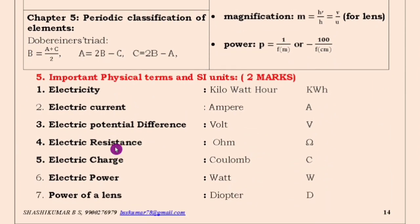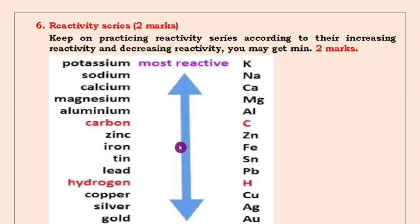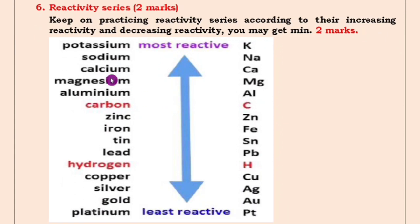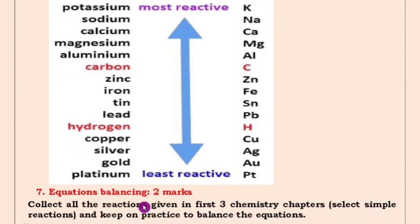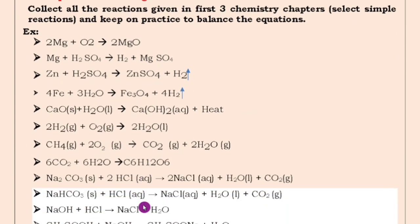The next one is importance of physical terms and SI units — all the physical terms and SI units are given here, so practice. Next is the reactivity series, which is very important. Potassium is very reactive and platinum is least reactive — practice it. The last one is balancing equations, which is also very important because from the chemical equations chapter they are going to ask 2 to 3 marks. Not only from that lesson, but also from acids, bases and salts — they are going to ask balancing chemical equations. So practice thoroughly.